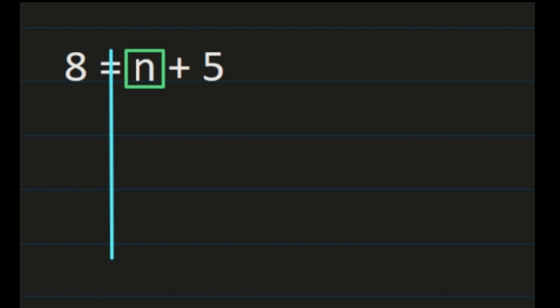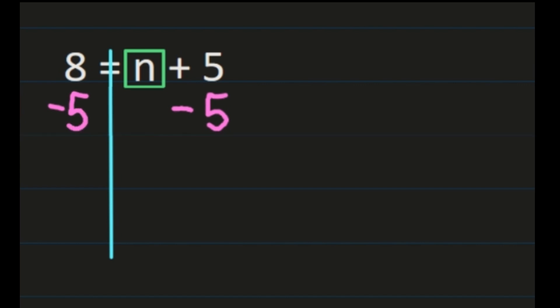Looking on the right-hand side, we have n plus 5, and we want to isolate the n and get it all by itself, which means we need to use the inverse operation. We added 5, so we need to subtract 5 as our inverse. If I subtract 5 from the right-hand side of my equation, I have to subtract 5 from the left-hand side of the equation to keep the two sides equal. If we start on the left-hand side, we have 8 minus 5 is 3. Then on the right-hand side, we haven't done anything to n, so n is still exactly how it is. And then we have 5 minus 5, and 5 minus 5 is 0.